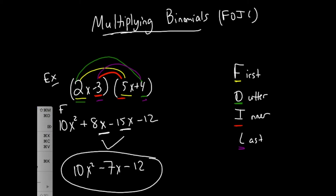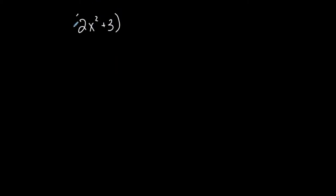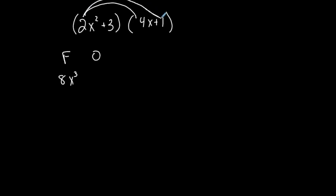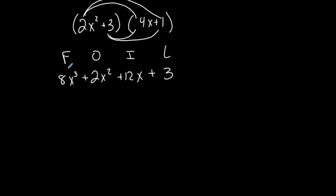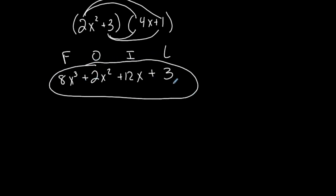Let me do one more product of binomials: (2x² + 3)(4x + 1). F — first: 2x² times 4x is 8x³. O — outer: 2x² times 1 is positive 2x². I — inner: 3 times 4x is positive 12x. L — last: 3 times 1 is 3. There are no like terms to combine, so the final answer is 8x³ + 2x² + 12x + 3, which is already in standard form. FOIL works because you're distributing each term in the first binomial into every term in the second.